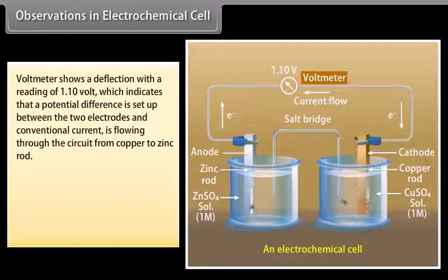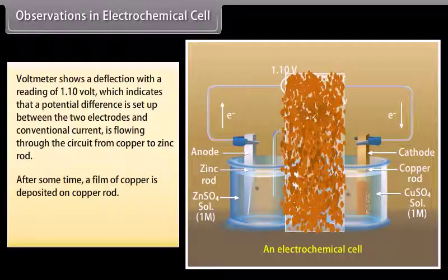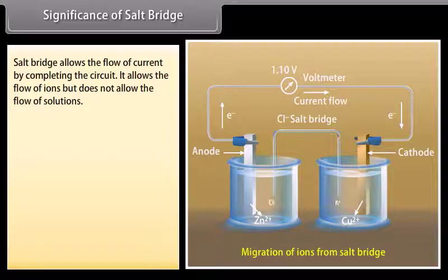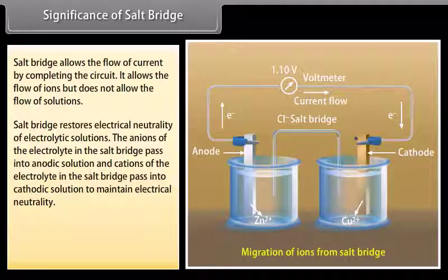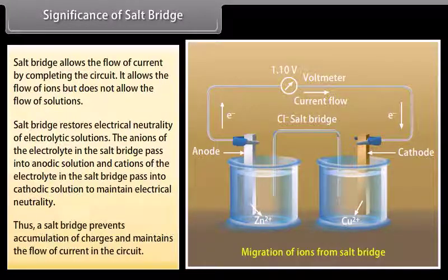Observations in the electrochemical cell: The voltmeter shows a deflection with a reading of 1.10 volts, indicating a potential difference between the two electrodes, with conventional current flowing from copper to zinc rod. After some time, a film of copper is deposited on the copper rod and the zinc rod is found to have lost weight. Significance of salt bridge: The salt bridge allows the flow of current by completing the circuit. It allows the flow of ions but does not allow the flow of solutions. It restores the electrical neutrality of the electrolytic solutions — anions pass into the anodic solution and cations pass into the cathodic solution — thus preventing accumulation of charges and maintaining the flow of current.